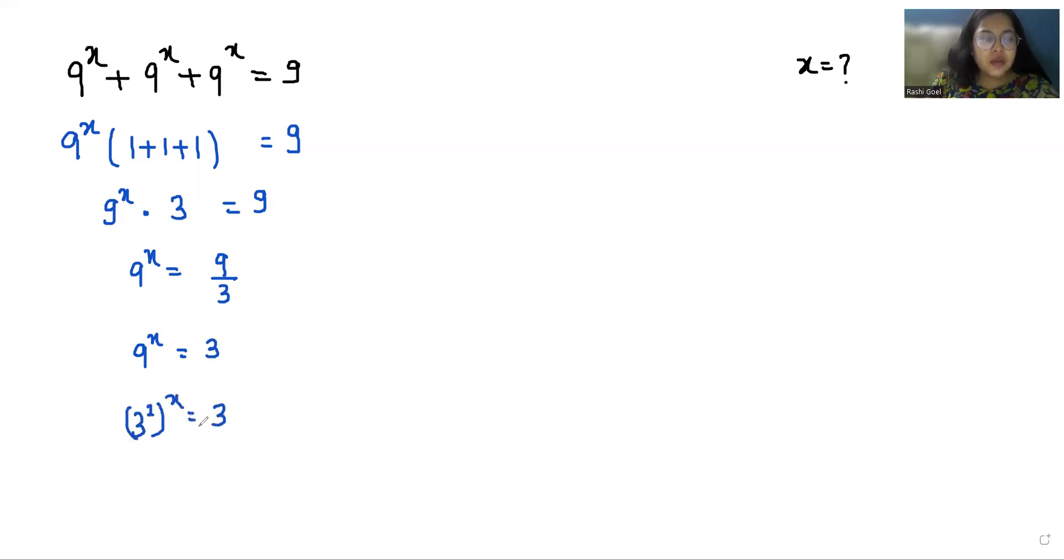Whole power x equals 3. Now we can use the exponent rule (a^m)^n = a^(mn). So it becomes 3^(2x) = 3^1.